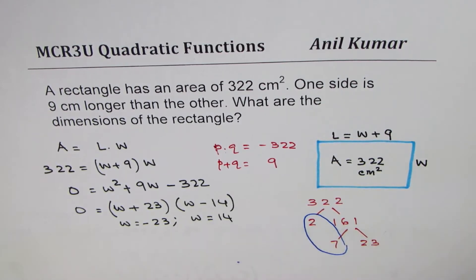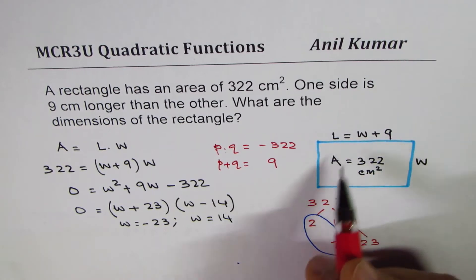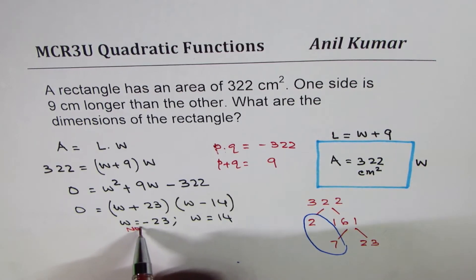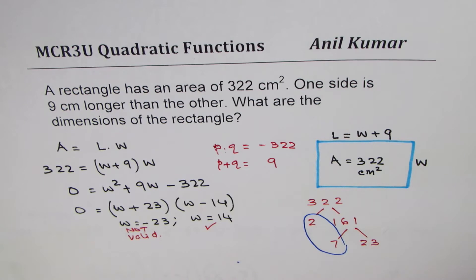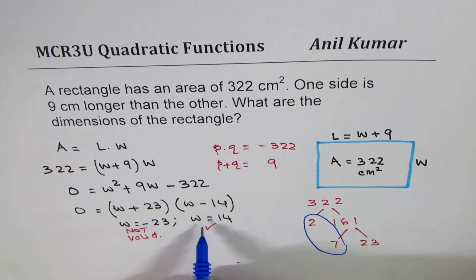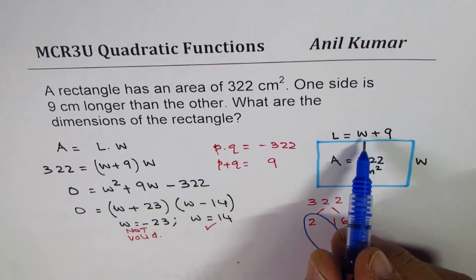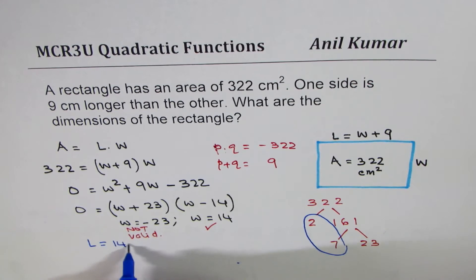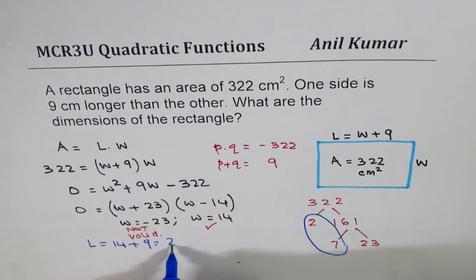To satisfy this equation, W could be equal to minus 23 or equals to plus 14. As you know we're talking about dimensions so negative is not valid. So we can take width as 14. Length we know is width plus 9, and therefore length will be equals to 14 plus 9 which is 23.